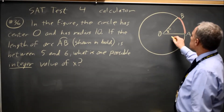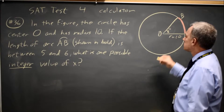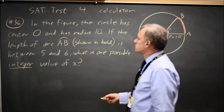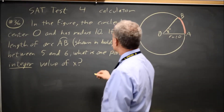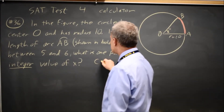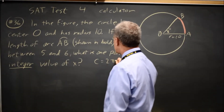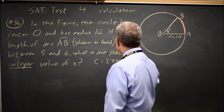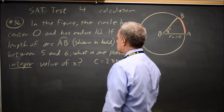The radius of this circle is 10, and since they're asking about arc length along the circumference, I'm going to find the entire circumference, which is 2πr, which is 20π.